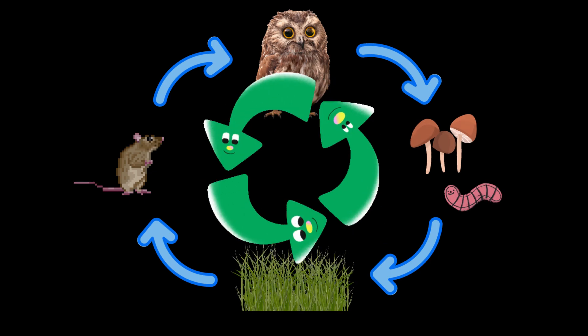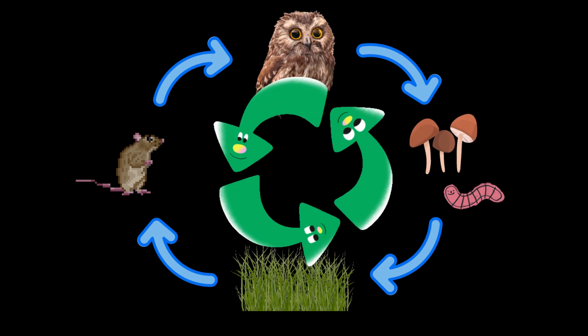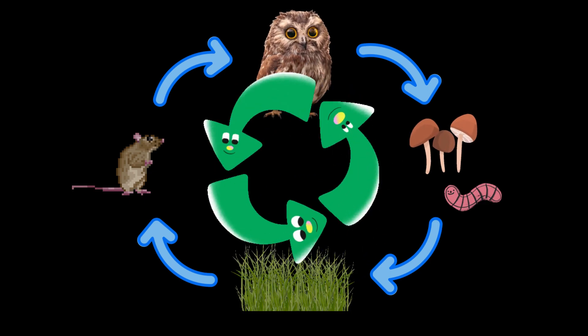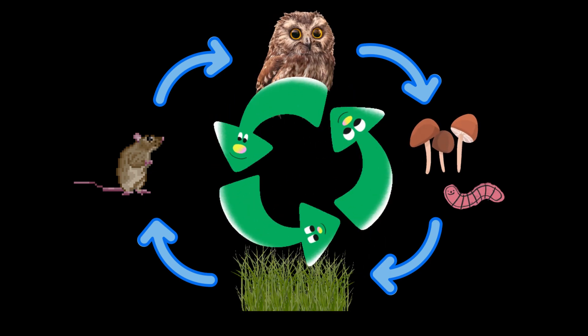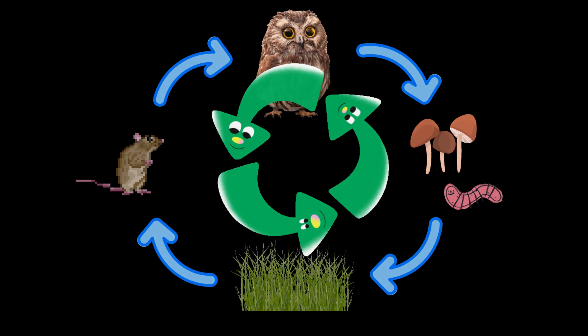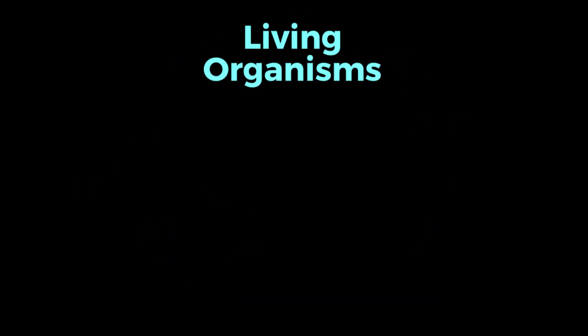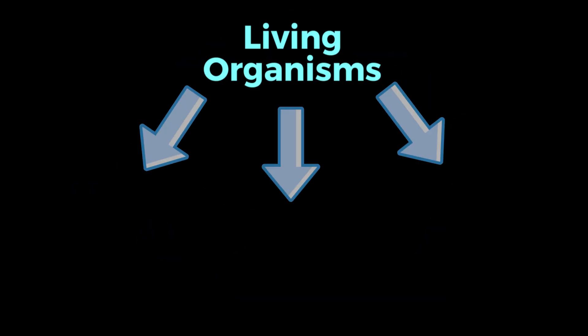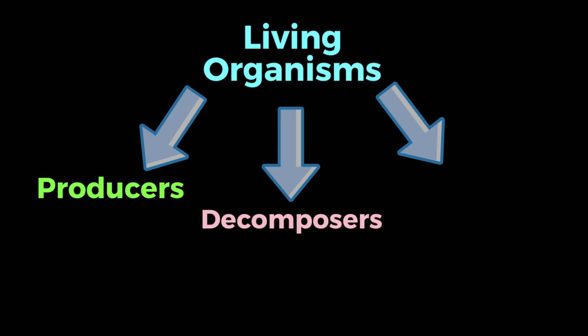Every single part of the ecosystem is very important. All of the living organisms in an ecosystem fall into one of three categories: the producers, the decomposers, or the consumers.